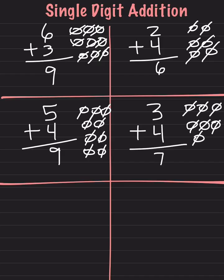We can do mental math here as well. We can start at 3 and then add 4 more: 3, then 4, 5, 6, 7.